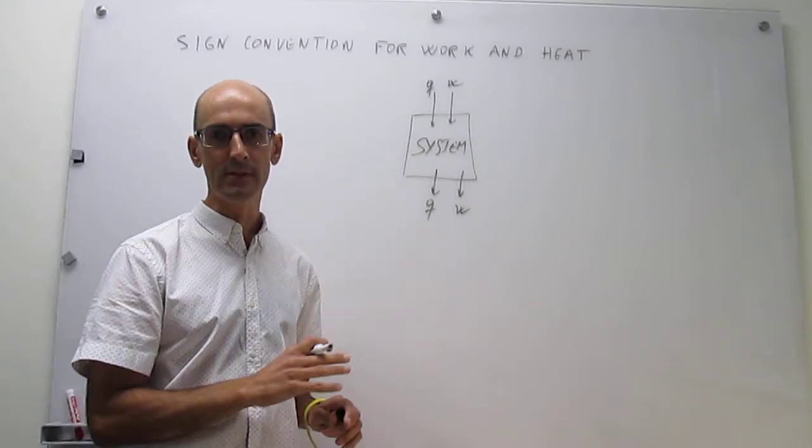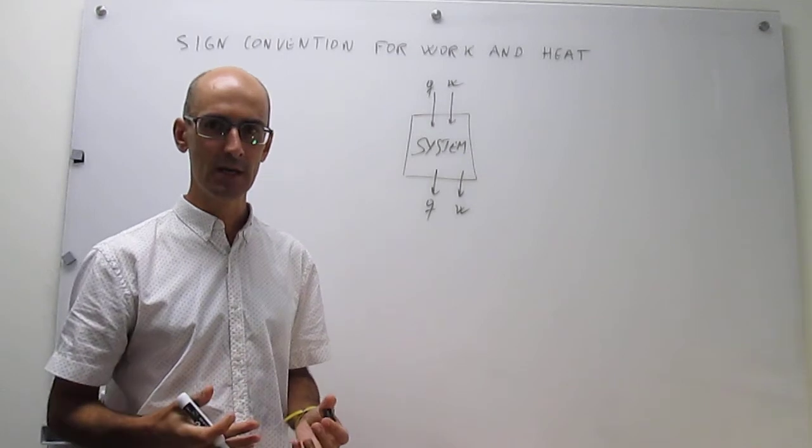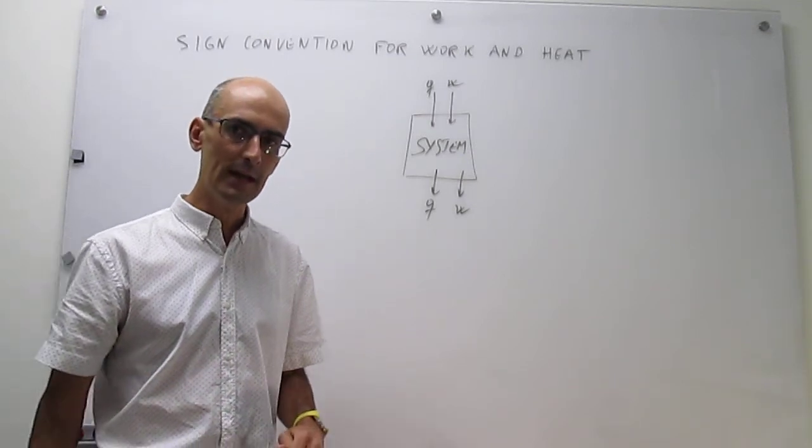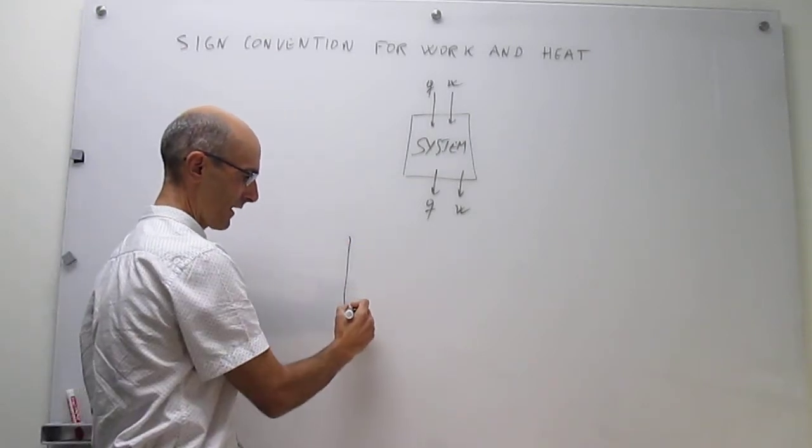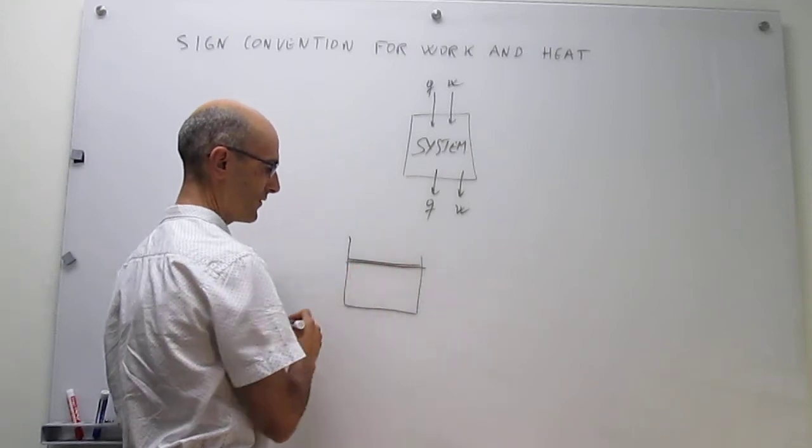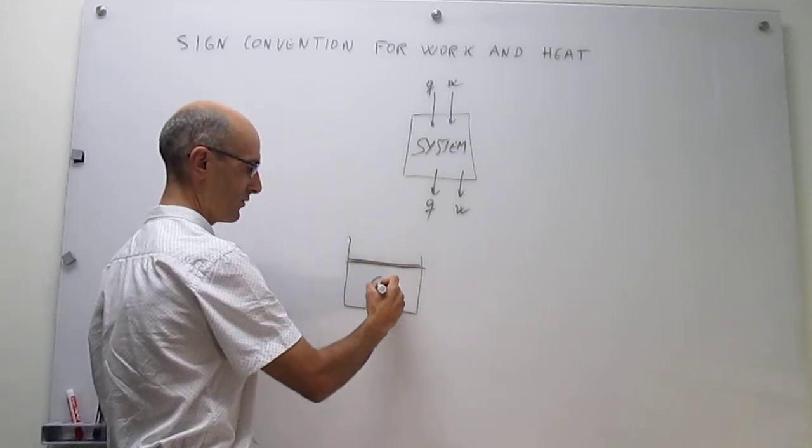Let's move away from this dry definition and try to see a couple of examples that are going to be hopefully a little bit more clear. Let's go to the example of a gas here inside a piston, a cylinder with a movable piston, and here you have your gas.